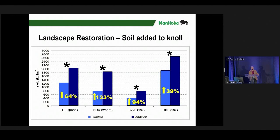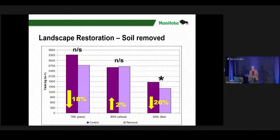David Lobb at the University of Manitoba has done a lot of research on soil landscape restoration — adding soil to the knoll. Work done with peas, wheat, and flax in the rotation showed a 64% increase in pea yield and a 133% increase in wheat yield on those knolls where soil was taken from the bottom and put back up. They did not see a significant impact in the low-lying areas where they took the soil from, with the exception of flax, where there was a slight difference due to some water ponding in the areas where soil was removed — more about wet feet than topsoil loss, since plenty of soil was left behind.